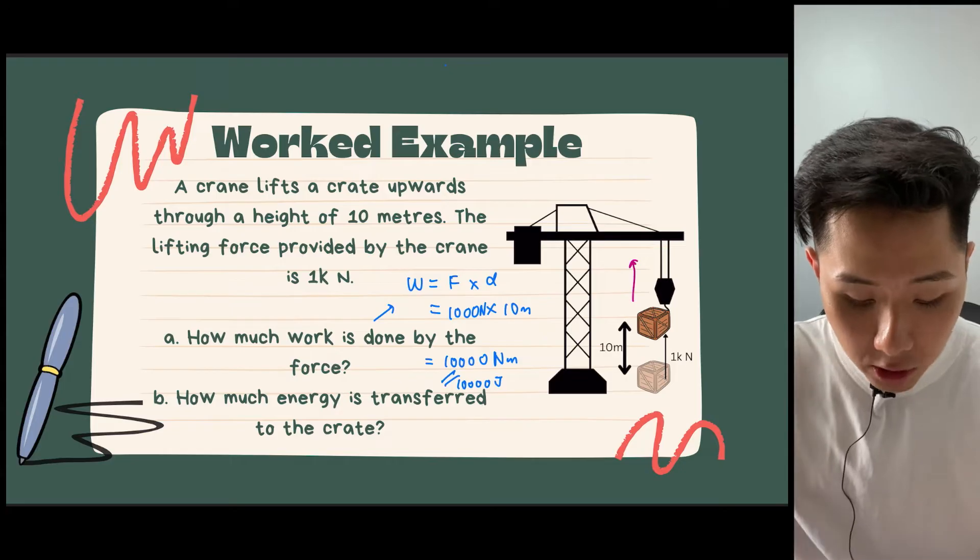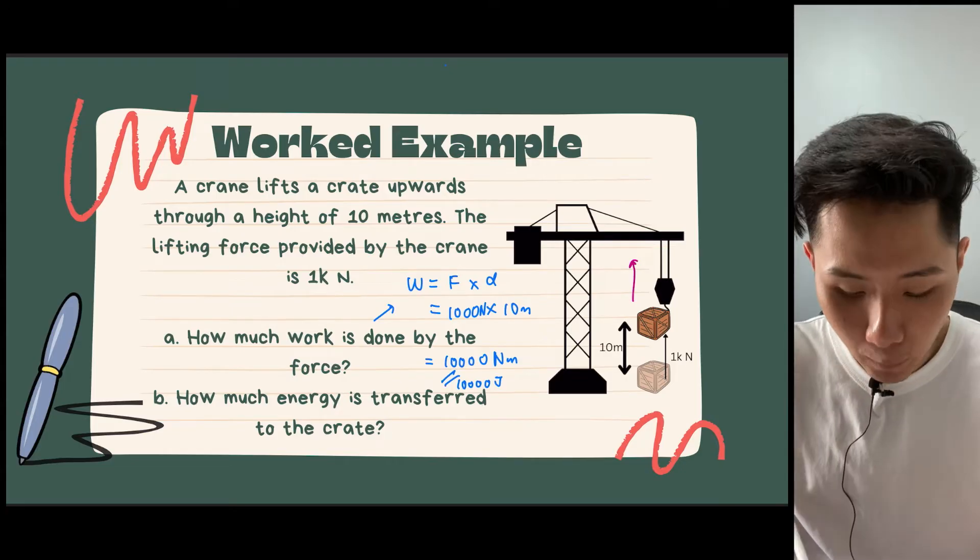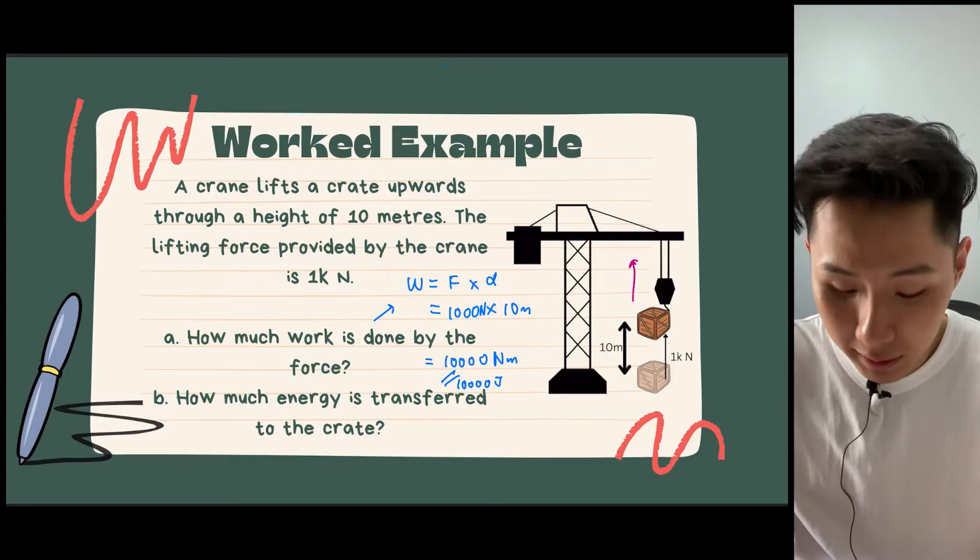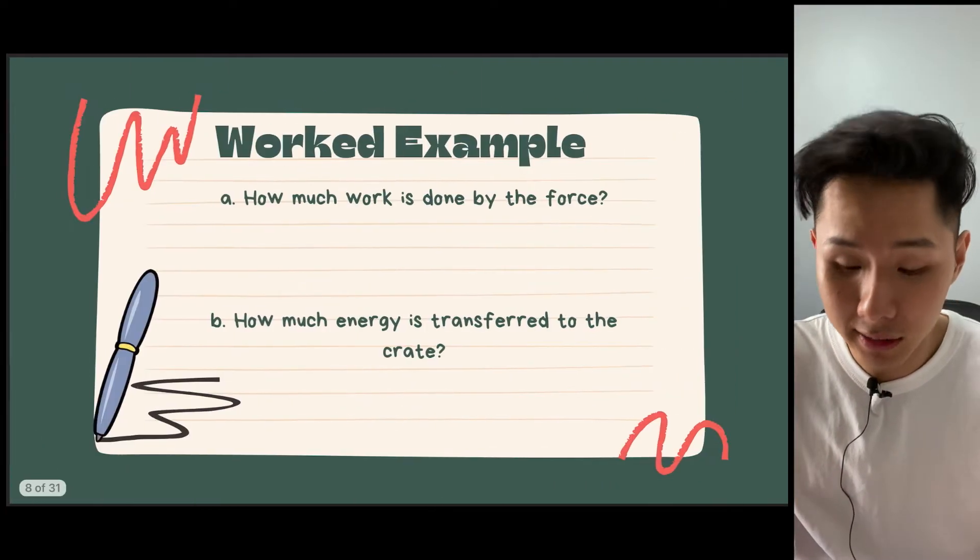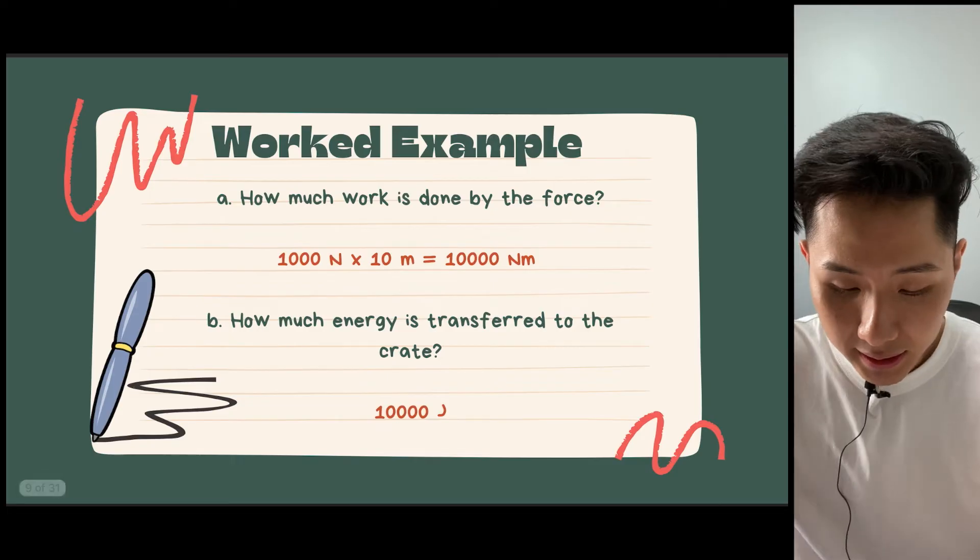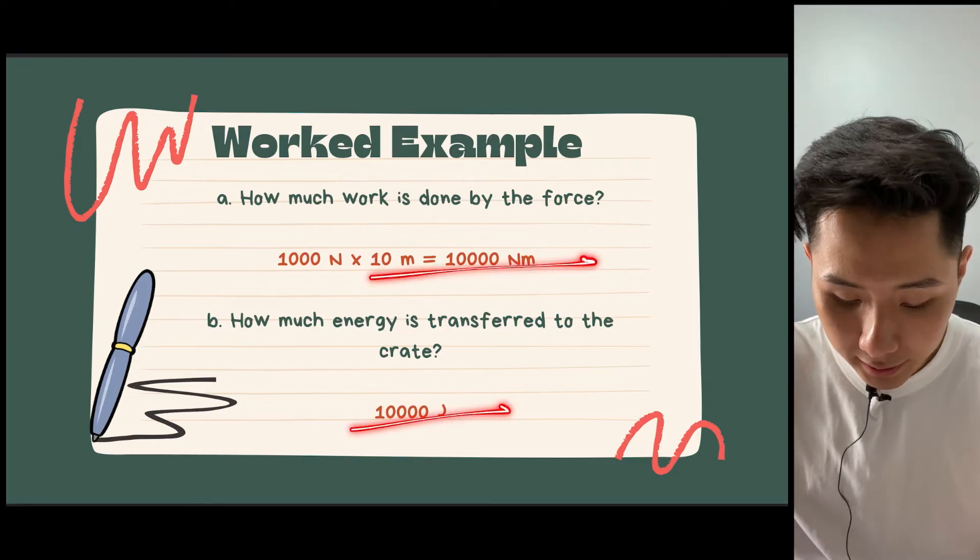Because work done is basically energy transfer, and the unit for energy is joules. Question B. How much energy is transferred to the crate? So because work done is energy transfer, so we can use the same answer for question B, which is 10,000. And that's the answer, 10,000 newton meter, 10,000 joules.